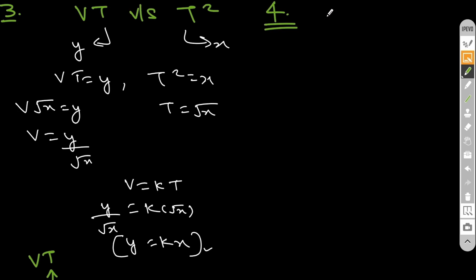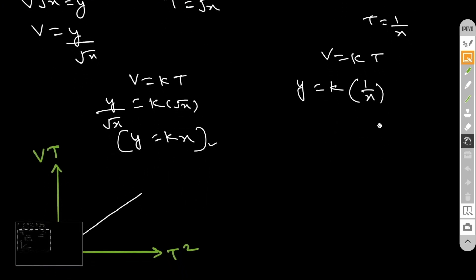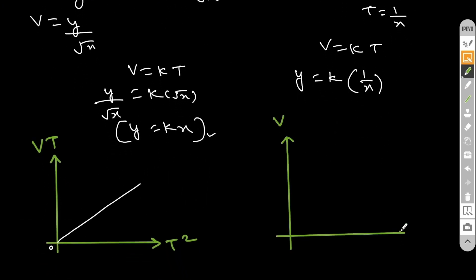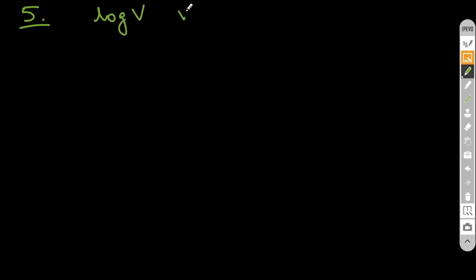The fourth graph is V versus 1/T. V is on the Y axis and 1/T on the X axis. So Y = V, X = 1/T, meaning T = 1/X. Substituting into V = KT gives Y = K/X. This is the equation of a hyperbola — when V approaches infinity, 1/T approaches zero, and vice versa.